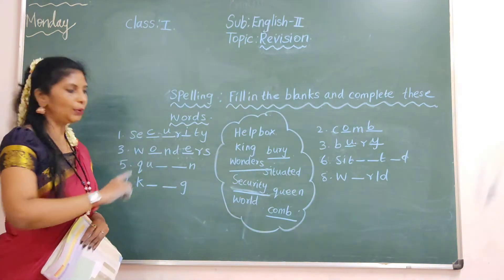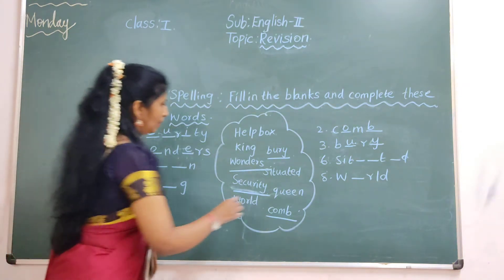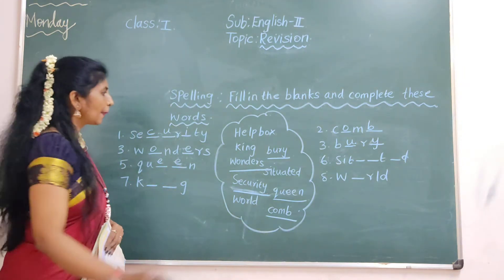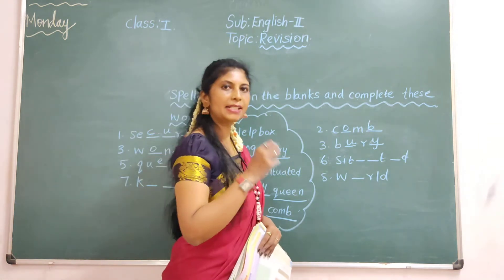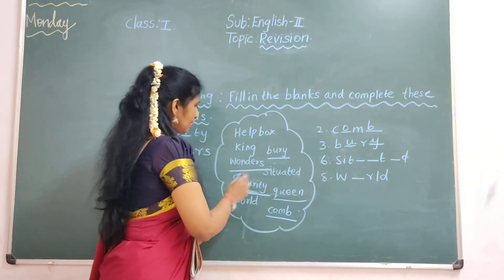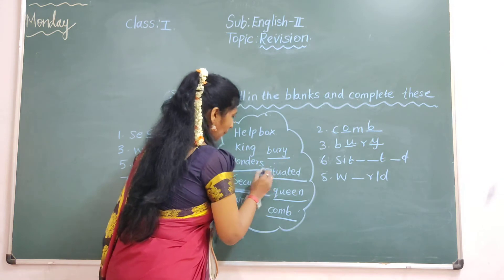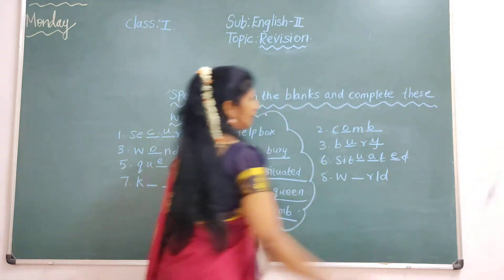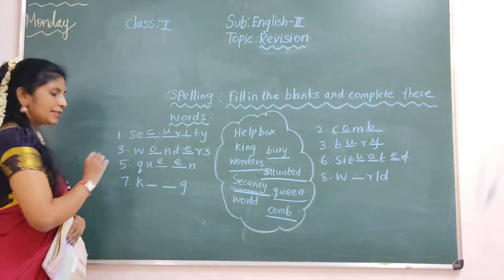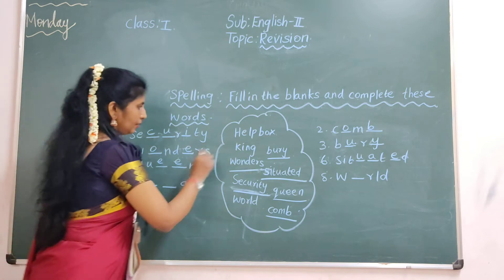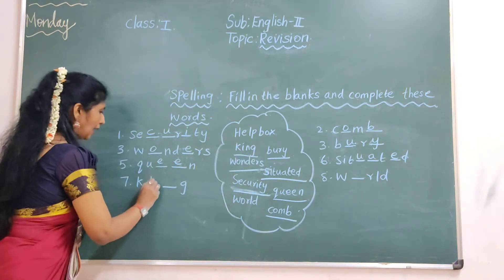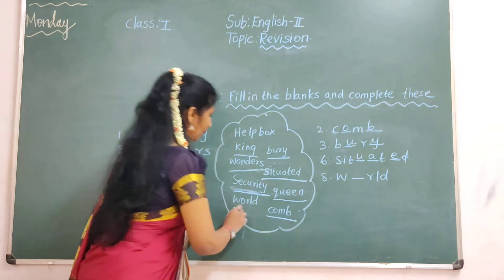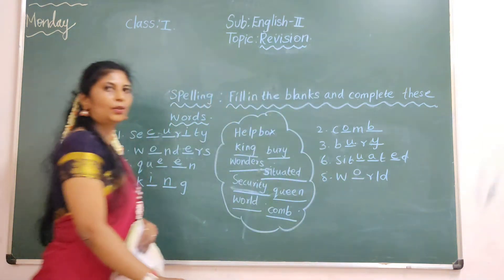Fifth one. Q-U-E-E-N: queen. Sixth one. S-I-T-U-A-T-E: situated. Next one. K-I-N-G: king. W-O-R-D: word.